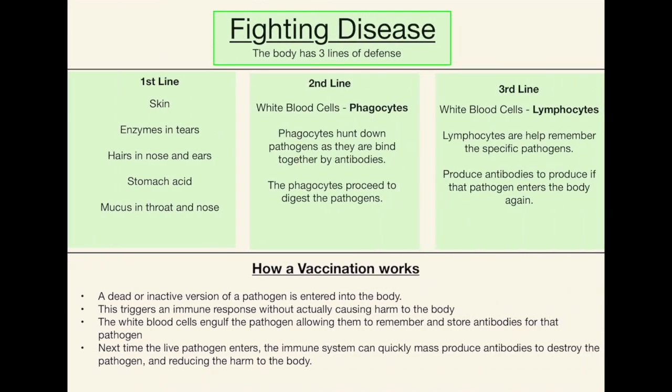Fighting disease. Let's say we haven't been able to prevent that disease and it has reached our body. Our body has three lines of defense. The first line of defense involves the skin. We have enzymes in the tears called lysozymes — higher level only. We have hairs in our nose and ears often called cilia, stomach acid at around pH 2 which is very high acidity — any bacteria that gets into our stomach will be instantly killed. And finally mucus in our throat and nose. These are physical barriers that stop pathogens getting into our body.